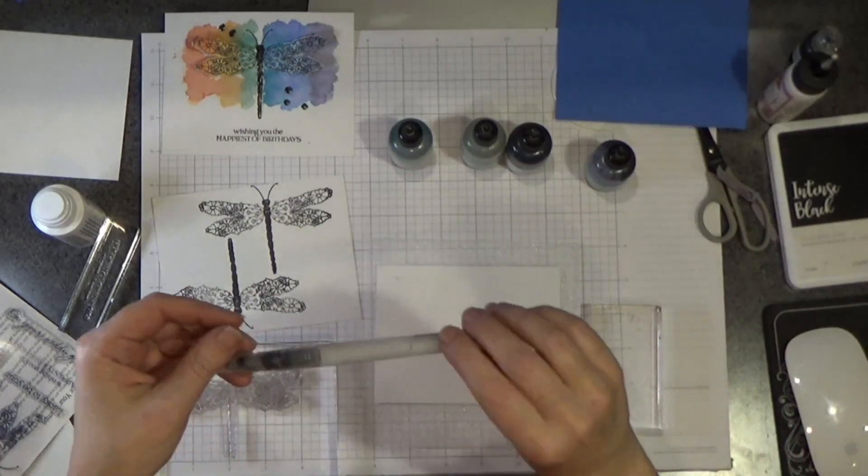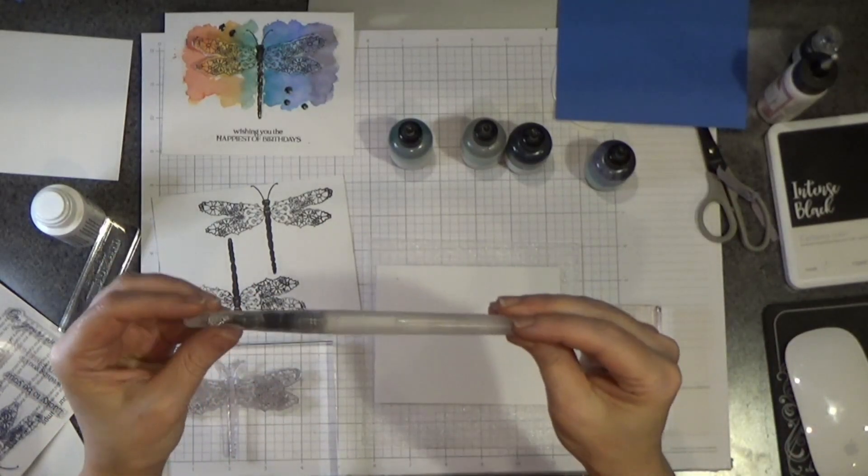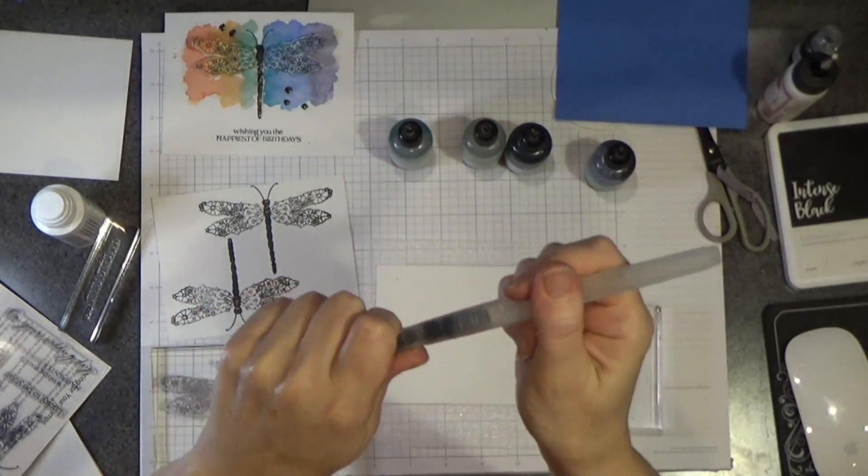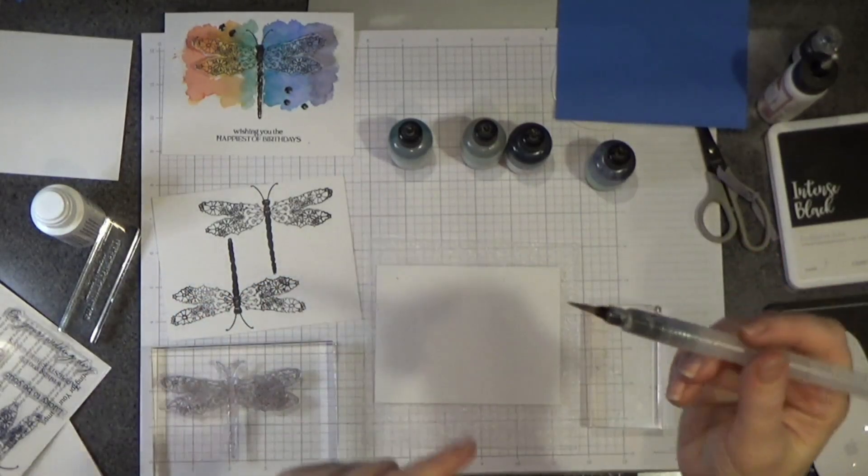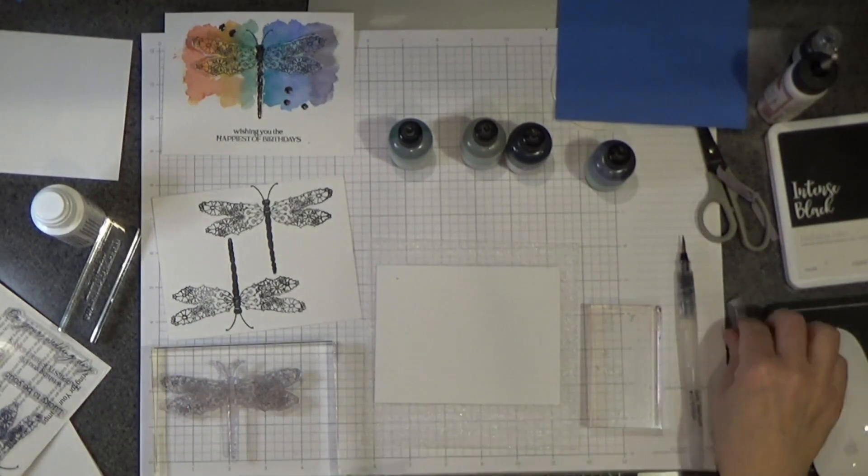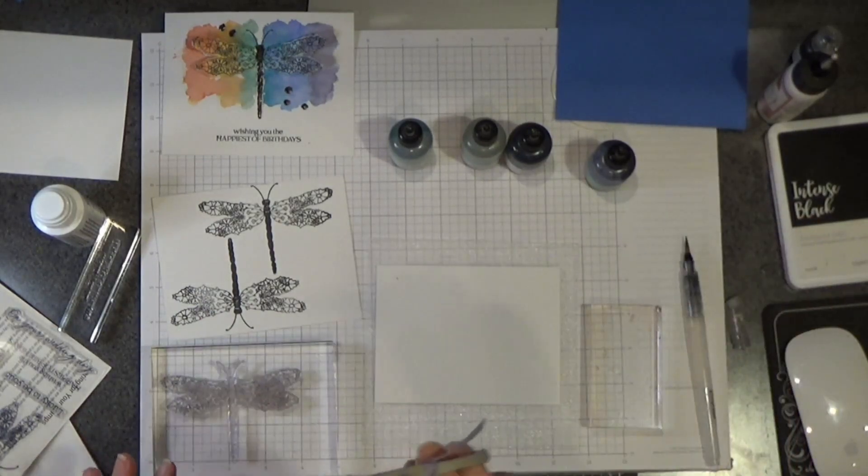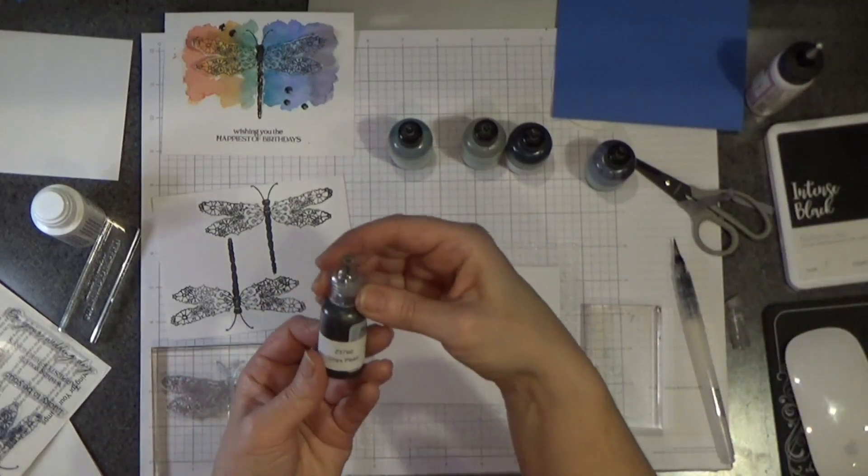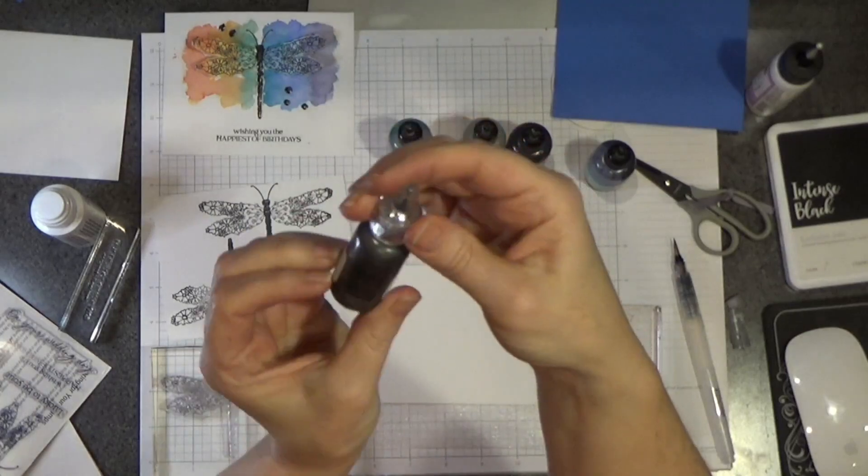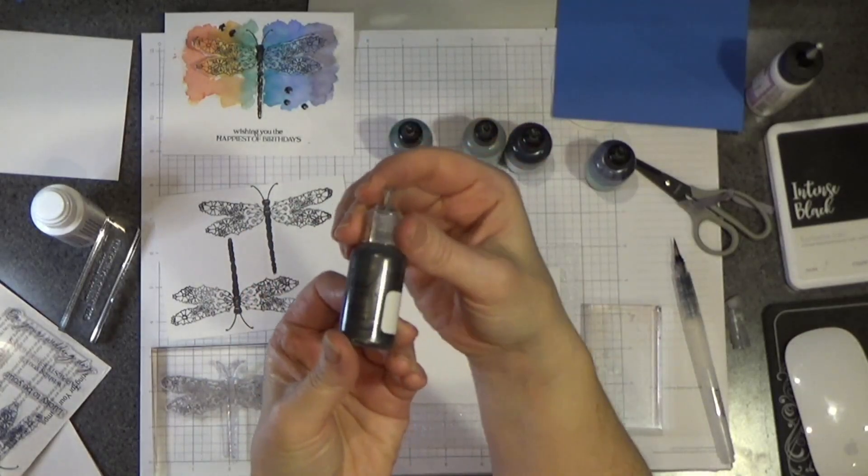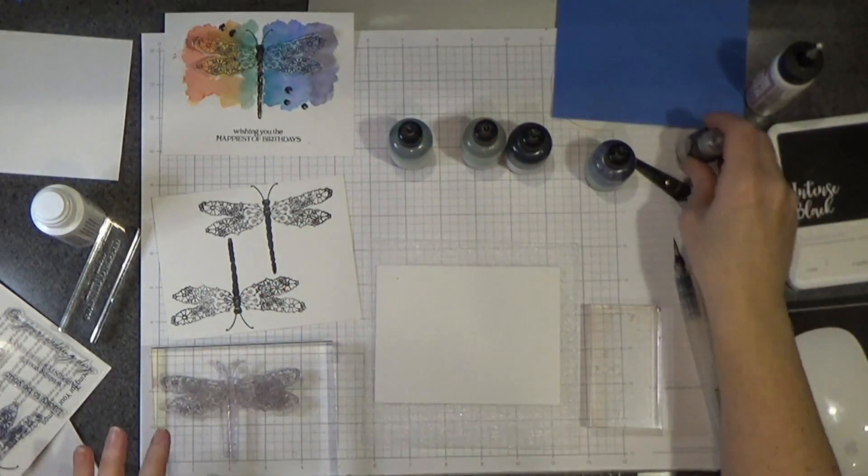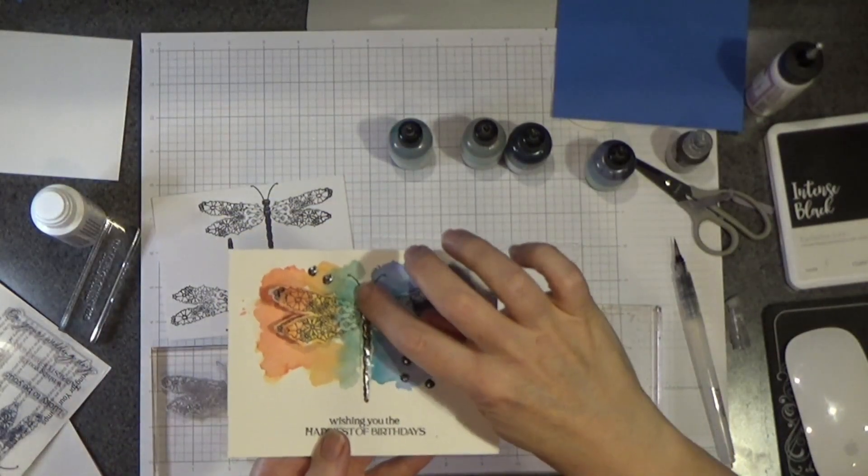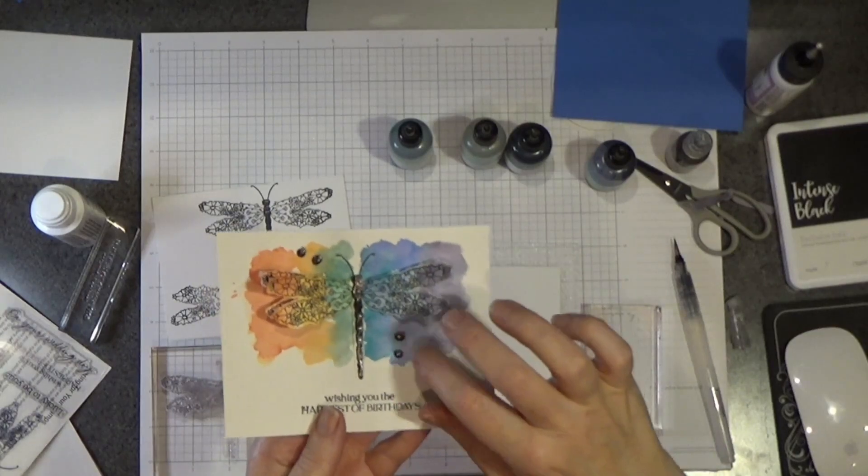I am also going to be using one of our water brushes. This has water in the barrel and a brush tip. We'll also need a little pair of scissors, a little glue, and if we get lucky we will throw on a little of this onyx pearl liquid pearls. This is really pretty stuff. It's what I used to do the body of the dragonfly and a few dots.